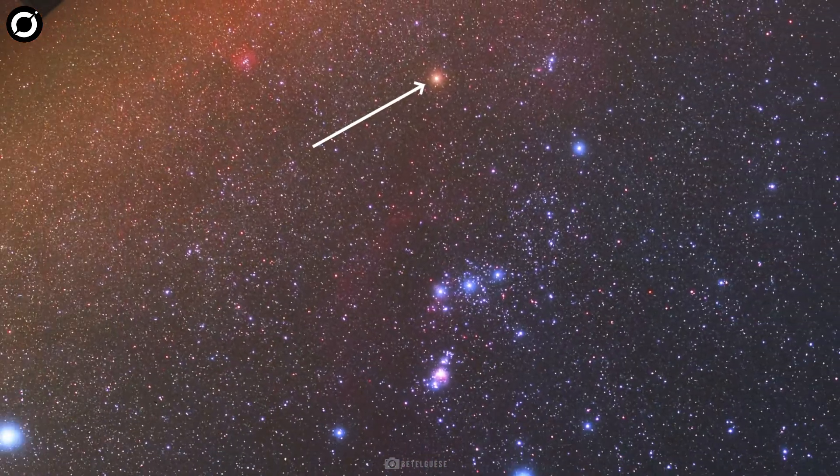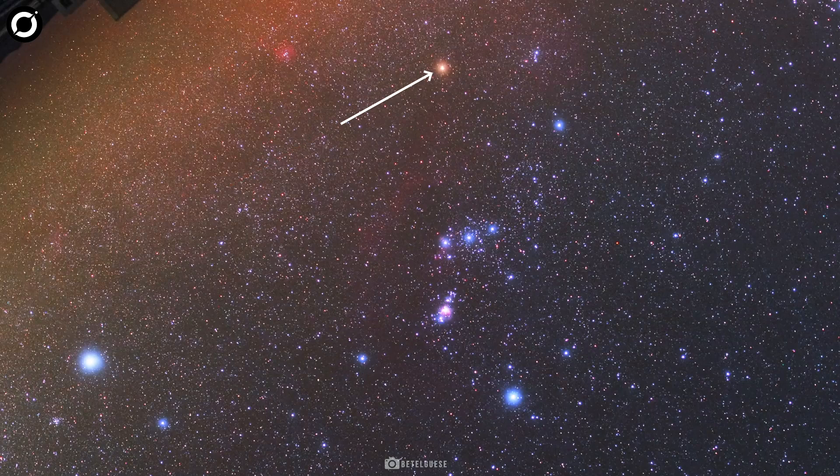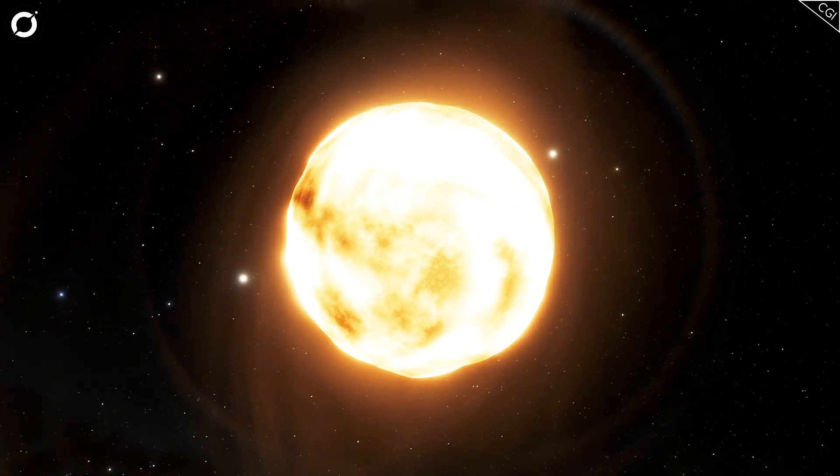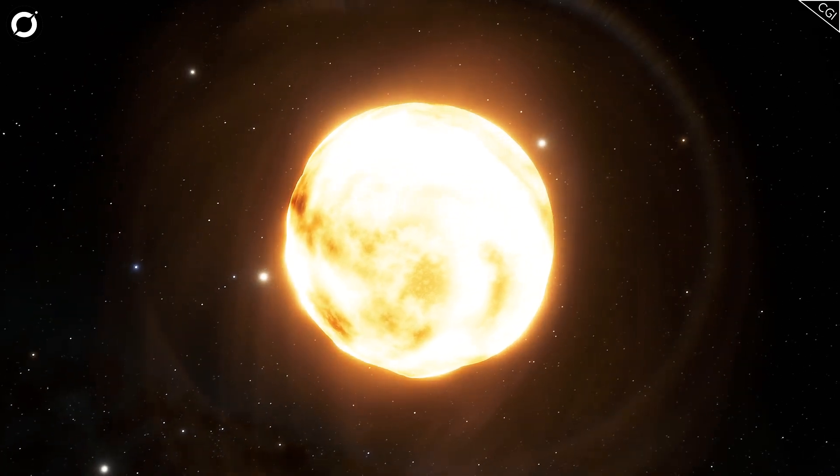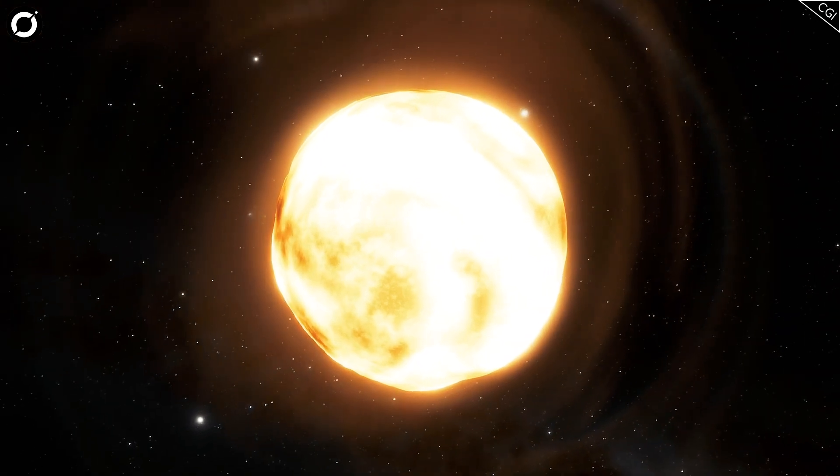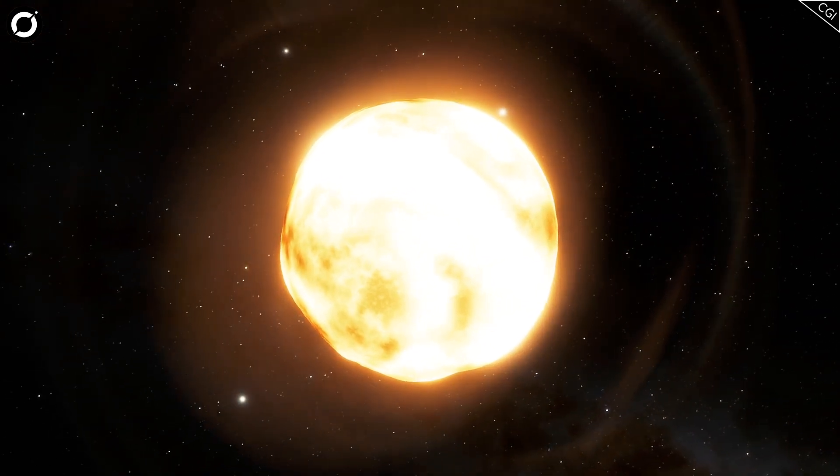Its vibrant red hue and prominent position have made it a favorite among stargazers and astronomers alike. But what makes Betelgeuse truly intriguing is its mysterious behavior. Astronomers call it a variable star because it pulsates, expanding and contracting in size over time.